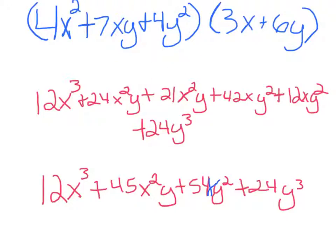After that, you have to do 4y to the second times 3x and 6y to get 12x to the third plus 24x to the second y plus 21x to the second y plus 42xy to the second plus 12xy to the second plus 24y to the third.